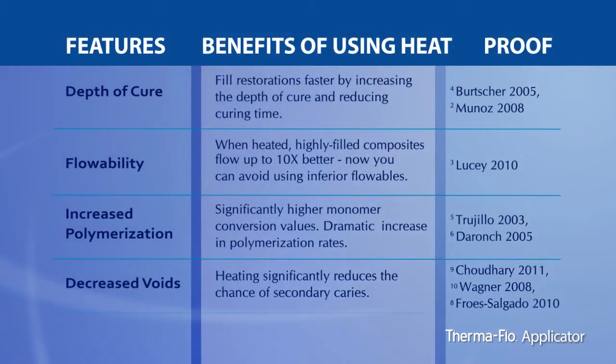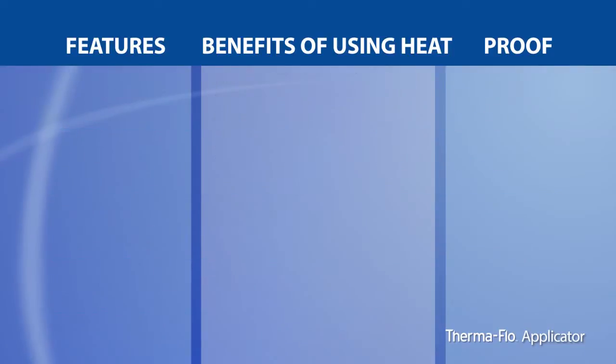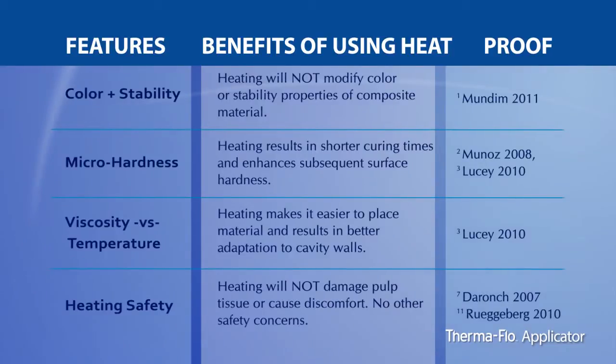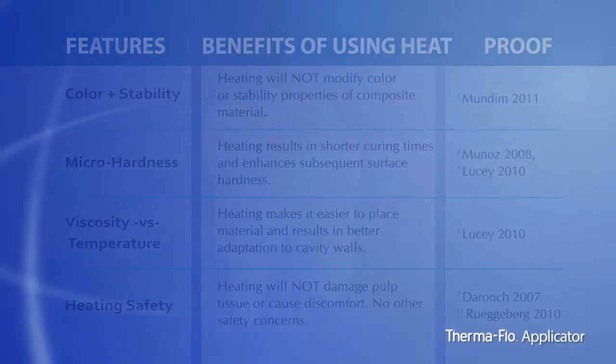Heating composite resin improves the physical properties of composite material without modifying color or stability. This procedure has been shown to be safe and will not damage the pulp tissue despite the elevated temperatures.